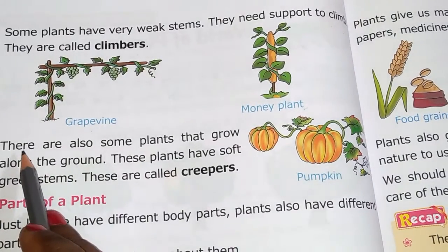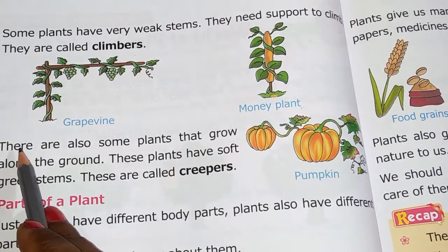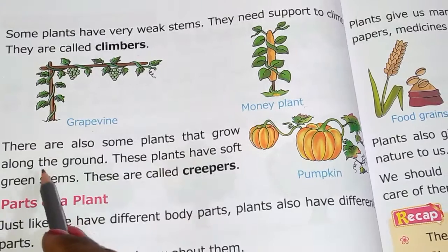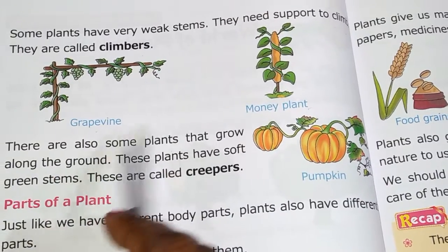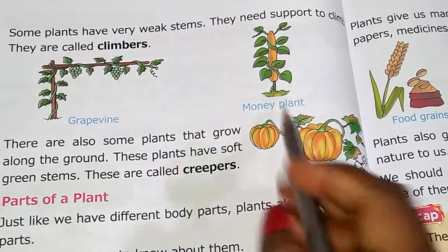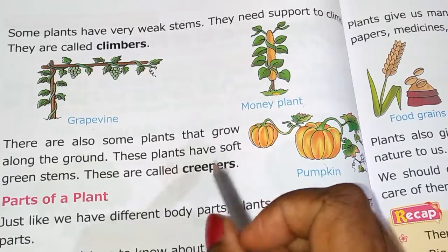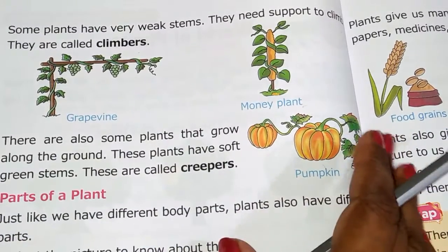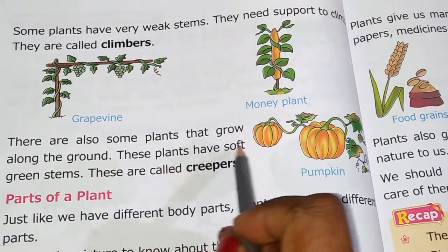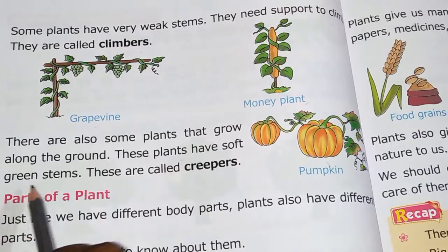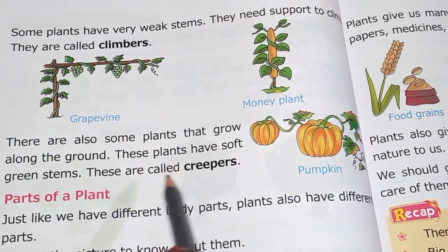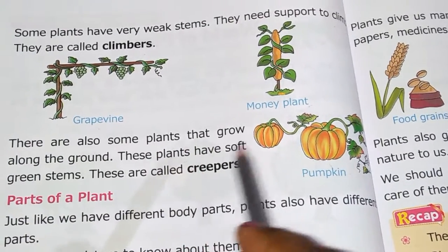Last one is creepers. There are some plants that grow along the ground because their fruits are very big and they can't climb. So they grow along the ground. These plants have soft stems and they are known as creepers.